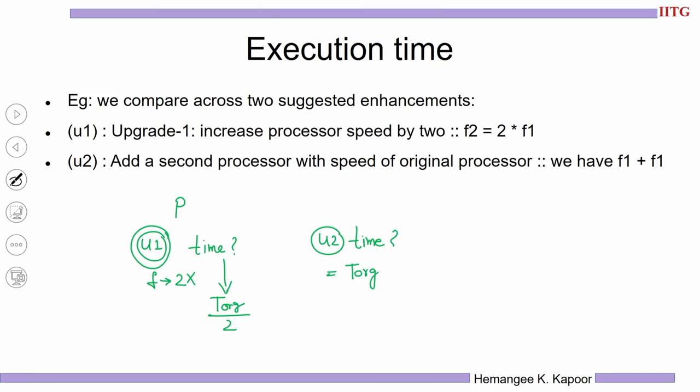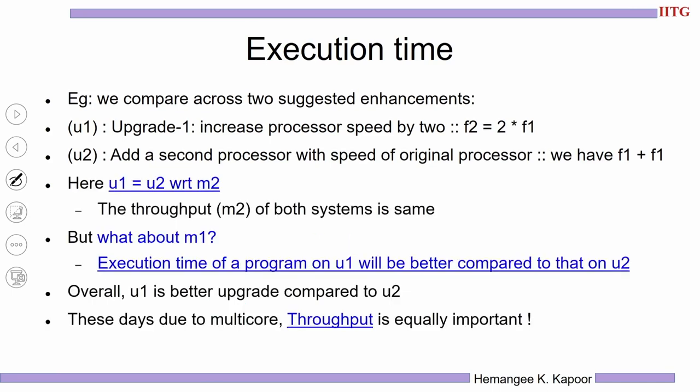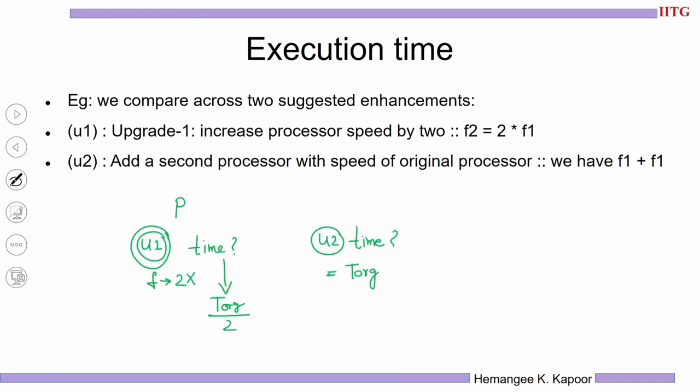So the execution time of that program on U2 does not change at all. With upgrade U1, doubling the frequency improves the execution time. Looking at both metrics — execution time and throughput — U1 and U2 are not giving the same outcome for M1 because the execution time on U1 is better than on U2. What happens for the second metric, throughput?